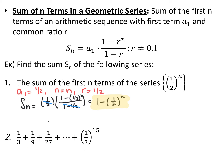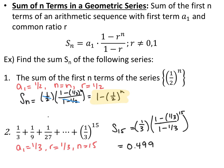Looking at the series 1/3 + 1/9 + 1/27 + ... + (1/3)^15 — pause the video and sum up that series. Our first term is 1/3, our common ratio is also 1/3, and we're going to the 15th term. Summing up the first 15 terms: (1/3) · (1 − (1/3)^15) / (1 − 1/3). Plugging this into a calculator and truncating gives 0.49999..., which rounds very close to 0.5.